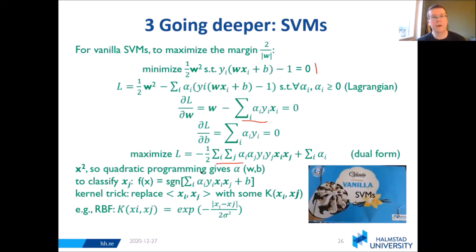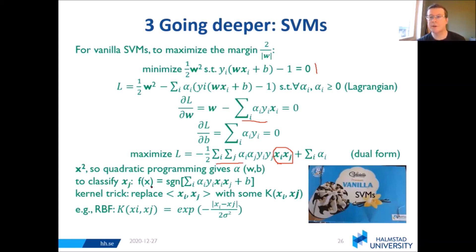So we get all the alphas, which gives us W and B. Then to classify some new data point, we can look at the sign of WX plus B, which is the sign of alpha Y X X plus B. We can of course use the kernel trick — you can replace this inner product X_i X_j with some kernel, where the RBF radial basis function is very common. Gamma is defined as one over two times the squared standard deviation.